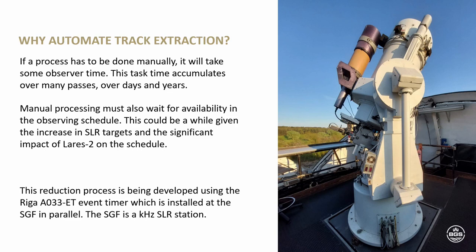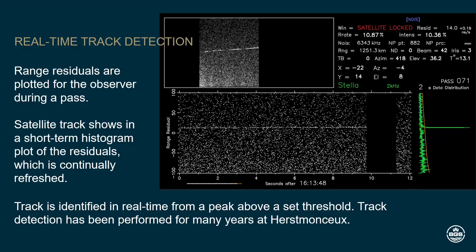This work is being developed using a second event timer — a REGA A033 event timer installed at the SGF in parallel with our system. Also, at Herstmonceux we have a kilohertz SLR station. For real-time track detection, when the observer is tracking a satellite, we plot the residuals so they can see what data is being recorded — both as residuals and as a short-term histogram which is continually refreshed. Track can be identified in real-time from a peak above a threshold, and this track detection has been done at Herstmonceux for a long time.